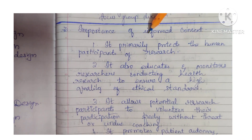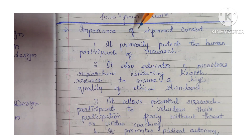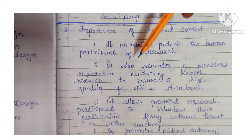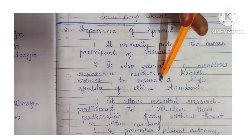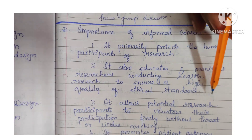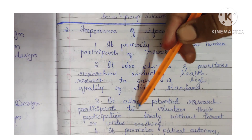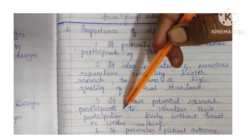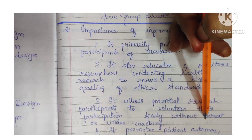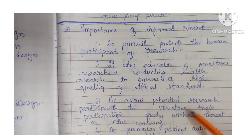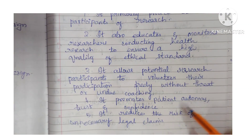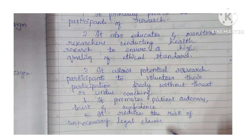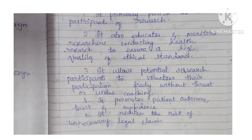Question 33: Importance of informed consent. It primarily protects the human participants of research. It also educates and monitors researchers conducting health research to ensure a high quality of ethical standard. It allows potential research participants to volunteer their participation freely without threat or undue coaching. It promotes patient autonomy, trust, and confidence. It reduces the risk of unnecessary legal claims or issues.